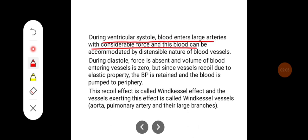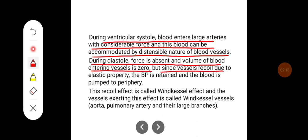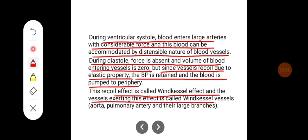During ventricular systole, blood enters the large arteries with considerable force, and this blood is accommodated by the distensible nature of the vessels. During diastole, force is absent and the volume of blood entering the vessels is zero, but since the vessels recoil due to their elastic property, blood pressure is retained and blood is pumped to the periphery. This recoil effect is called the Windkessel effect, and vessels exerting this effect are called Windkessel vessels — for example, the aorta, pulmonary artery, and their large branches.